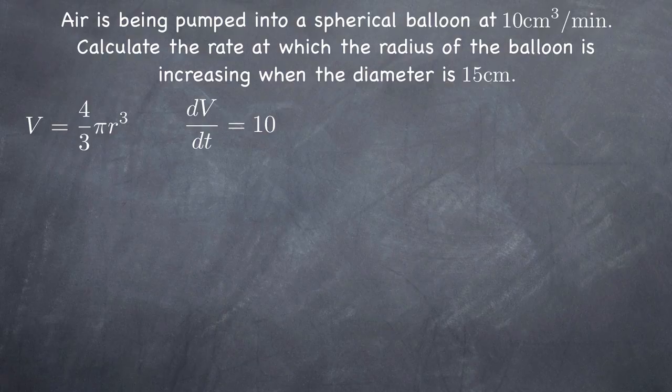We also know the diameter at the point in time in question. Because our equation is in terms of radius, not diameter, we'll convert the diameter to a value for radius. We need to find the rate at which the radius is increasing. Rate of change of a variable is that variable's derivative, so we're actually looking for dr over dt.